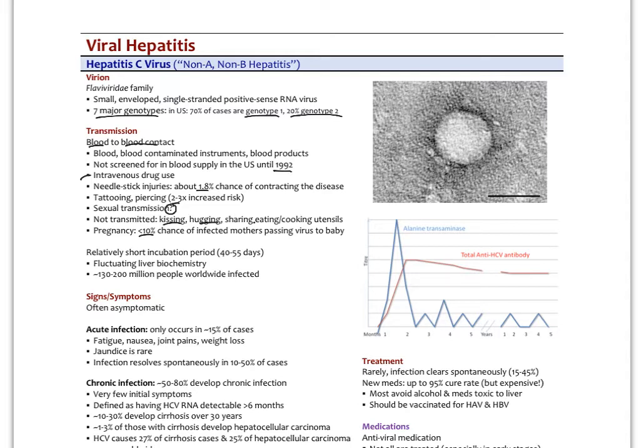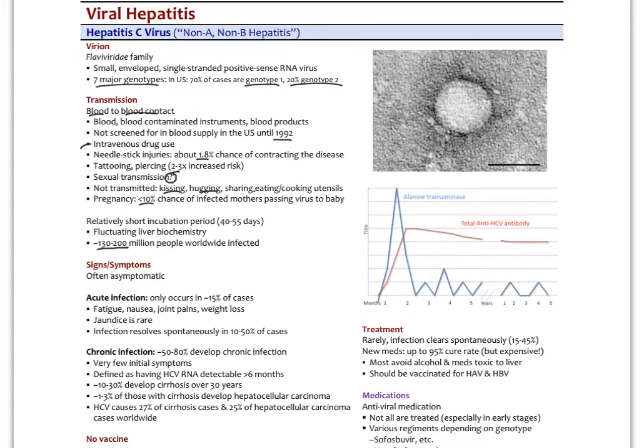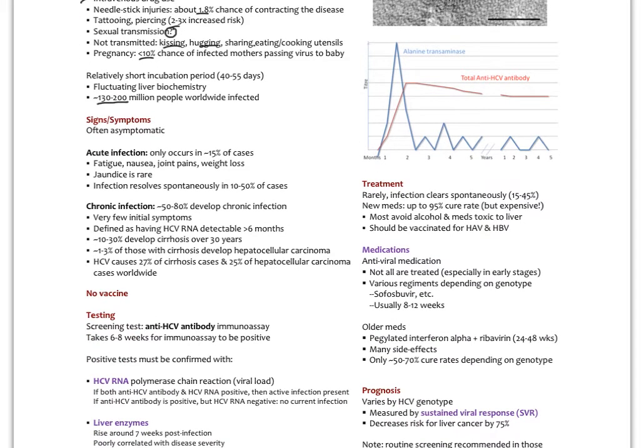We see fluctuating liver chemistry and we suspect about up to 200 million, it's probably more at this point worldwide are infected. The problem with hep C is it's often asymptomatic. The acute infection happens only in about 15% of people. They think they might have the flu, get some joint pains, nausea, vomiting. Jaundice is very rare and it just resolves in those patients.